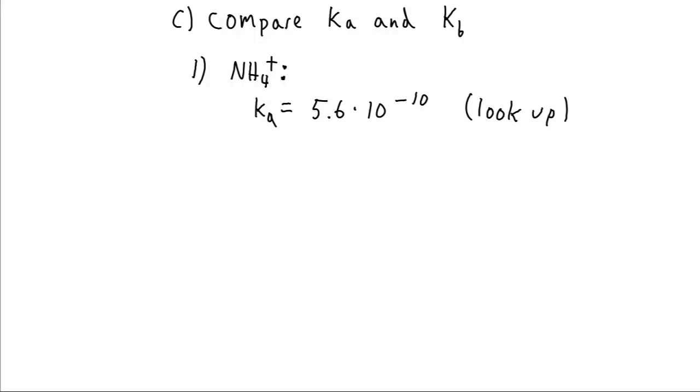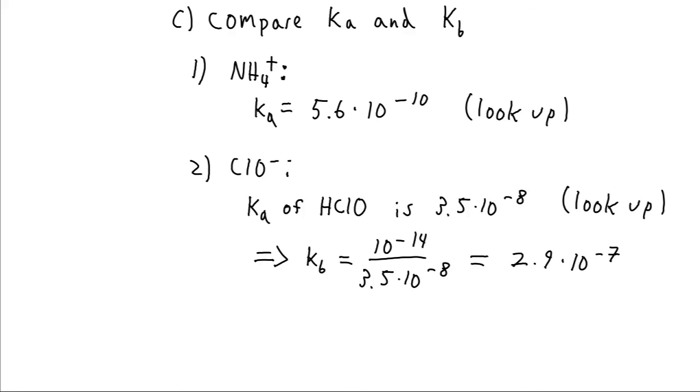We can start by looking up our ammonium. When we look it up, we find it has an acid dissociation constant of 5.6 times 10 to the minus 10. Now we can work on the hypochlorite. It may be when we look in our table that we don't find it. It's more likely that we will find the conjugate acid, the hypochlorous acid.